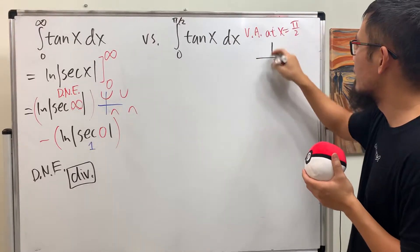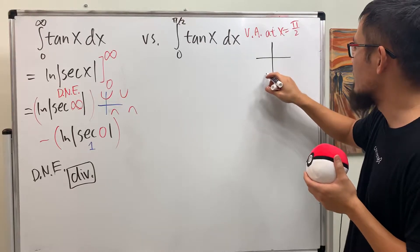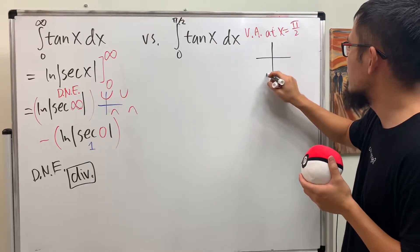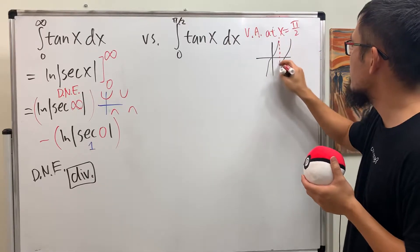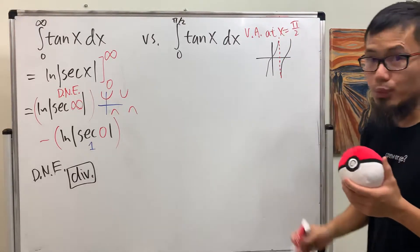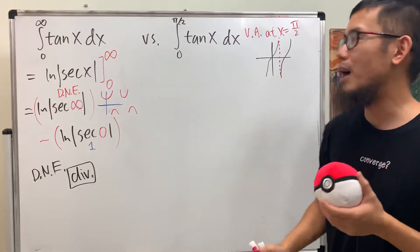Right. So just as a reminder, when we have the graph of tangent, it looks like this, a bunch of these guys. And when x is π over 2, it's right there. So we have a vertical asymptote. That's why this is improper.